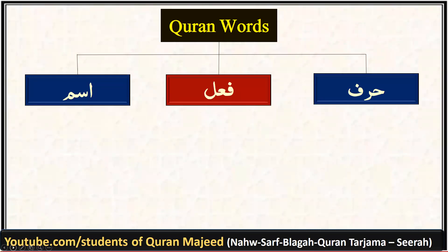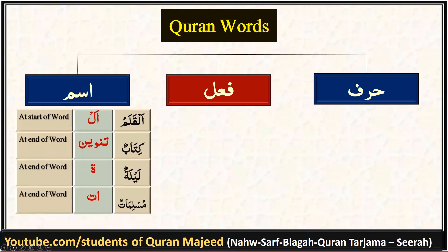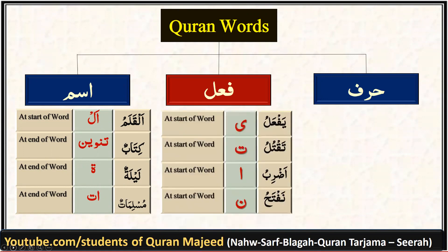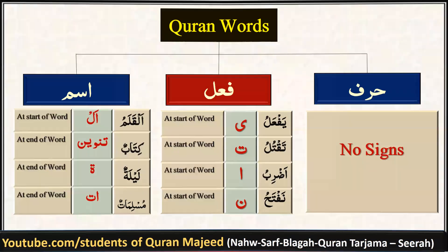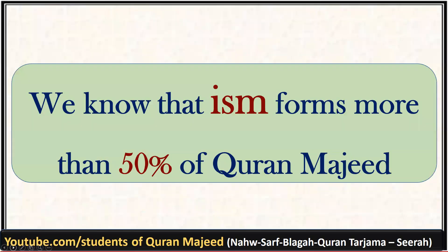As we have already learned, there are three types of words in Quranic Arabic: ism, fi'l, and harf. Ism can be identified with the help of signs: alif laam at the beginning of the word, or tanwin, round ta, and alif ta at the end. Fi'l can be recognized with the help of four letters: ya, ta, hamza, and noon. Harf cannot be recognized with signs as it has no specific sign.